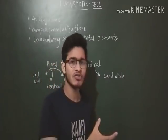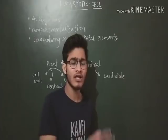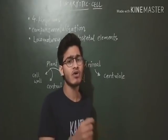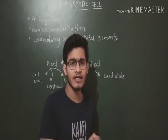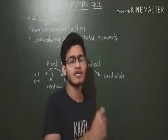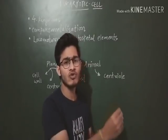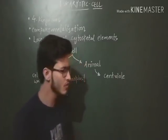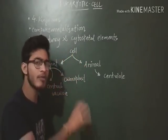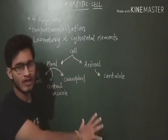We talked about the general characters of a prokaryotic cell. After that we talked about the cell envelope in detail, as well as the gram staining procedure, ribosomes, inclusion bodies, and eukaryotic ribosomes.